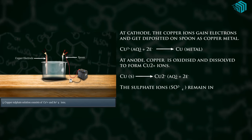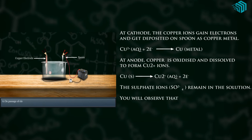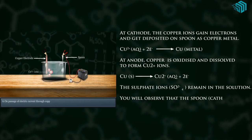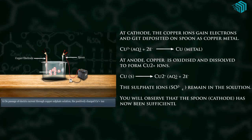The sulfate ions (SO₄²⁻) remain in the solution. You will observe that the spoon (cathode) has now been sufficiently coated with copper.